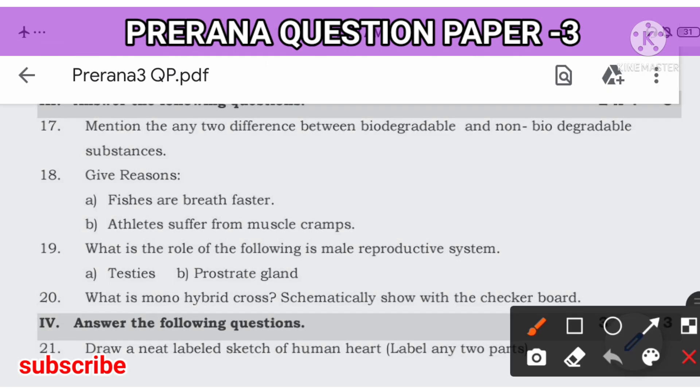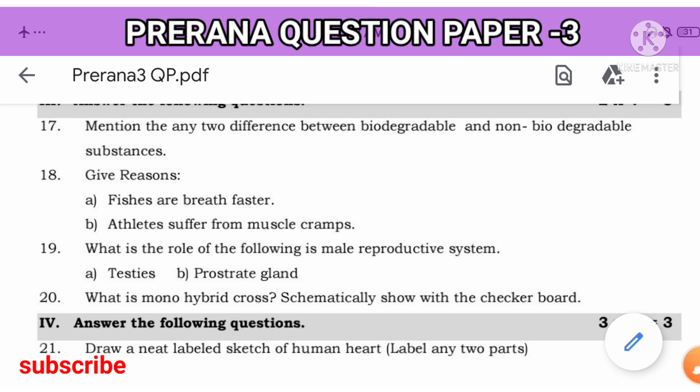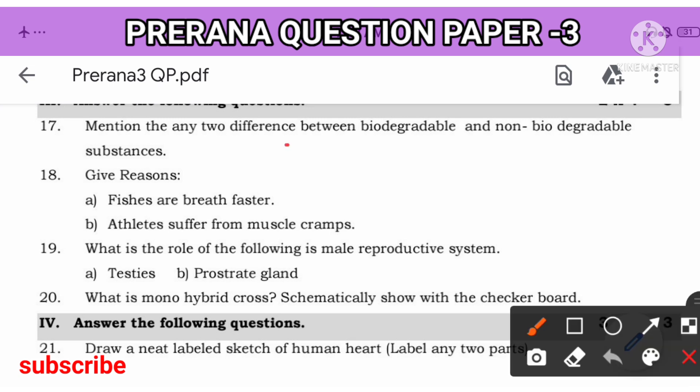Next question: Mention any two difference between biodegradable and non-biodegradable. Already I have repeated. Biodegradable can easily mix up with the soil. Non-biodegradable cannot be mixed up with the soil. They are eco-friendly or they are not eco-friendly. This much only, you will get full marks. Next. Fishes breathe faster. Why? Because they breathe in dissolved oxygen. Athletes suffer from muscle cramps. Why? Due to lack of oxygen. Due to lack of oxygen when they are running.